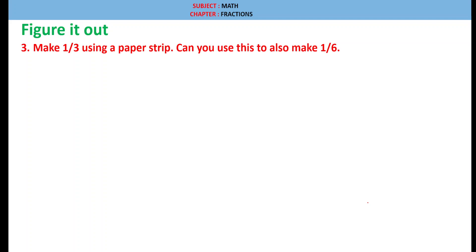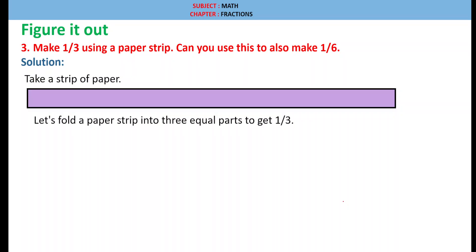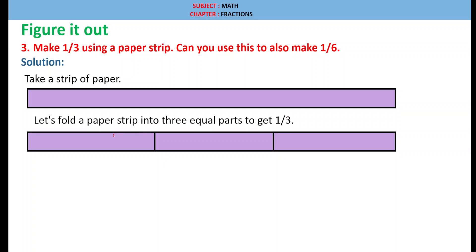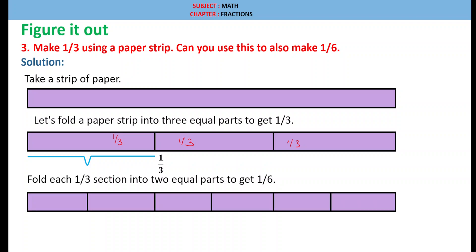Question 3: Make 1 by 3 using a paper strip. Can you use this to also make 1 by 6? Solution: Yes. Take a strip of paper, considering it as one whole unit. Fold the strip into three equal parts to get one third. Each part becomes 1 by 3. To make 1 by 6, refold each one-third section into two equal parts — so each single part equals 1 by 6.